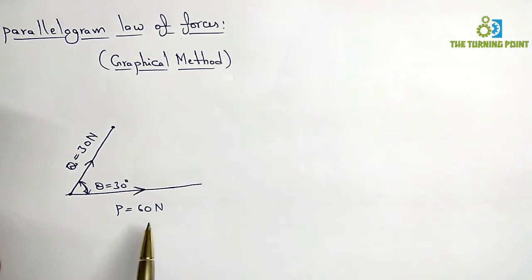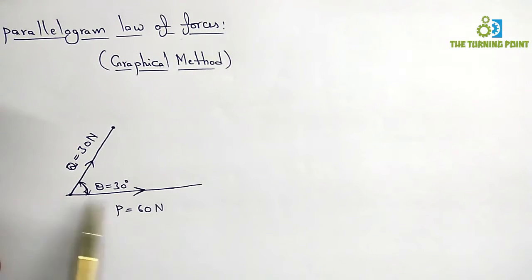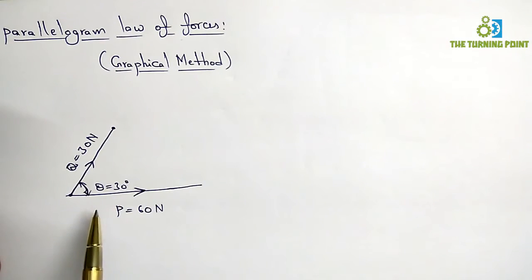Suppose there are two forces: one is 60 newtons and the other is 30 newtons. Both have an inclination of 30 degrees with each other. If we want to calculate the resultant for these two forces,